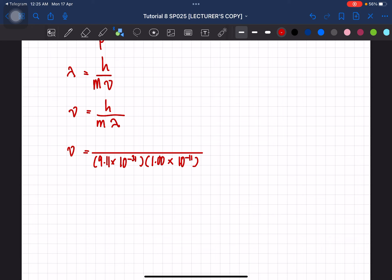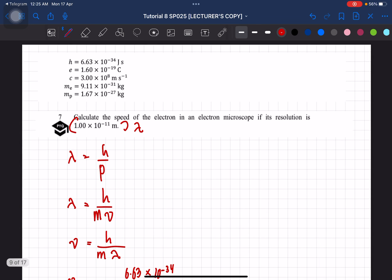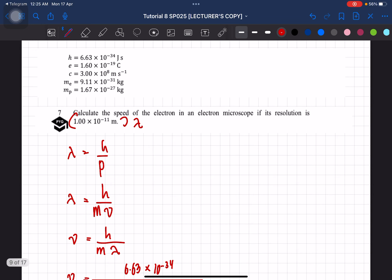Okay, so h is 6.63 times 10 negative 34. So v here is equal to 7.28 times 10 to the power of 7 meter per second. Okay, so that is the solution for question 7.